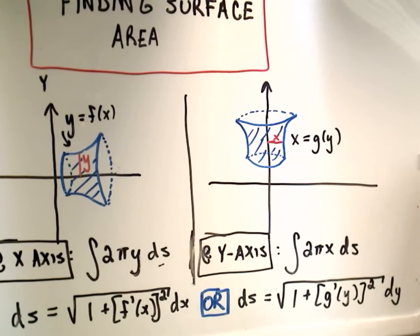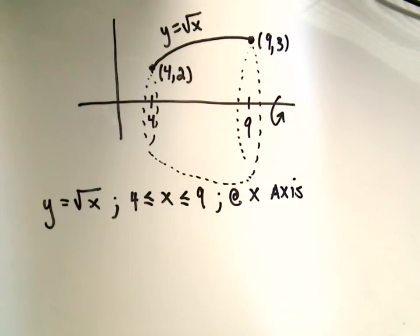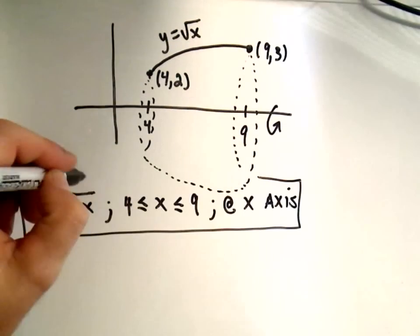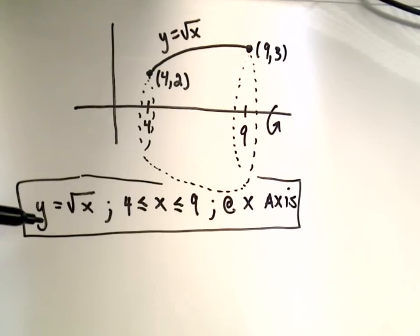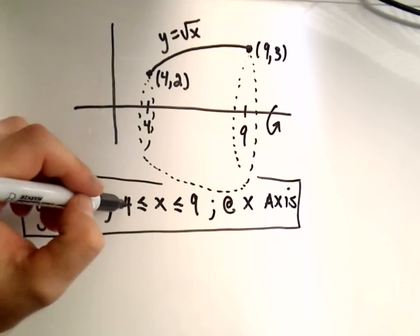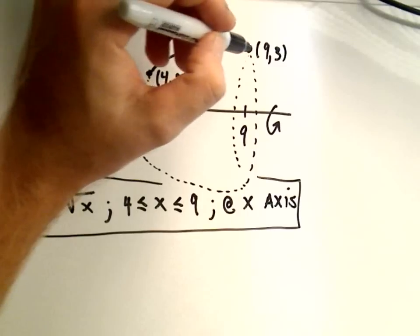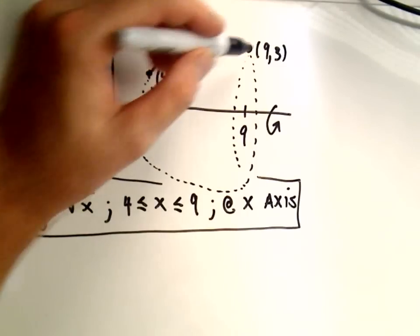Okay, so I'm going to do a simple example just illustrating the two formulas. In this first example, maybe the only one we'll have time for on this video, I'm going to take the curve y equals square root of x between the x-coordinates of 4 and 9.